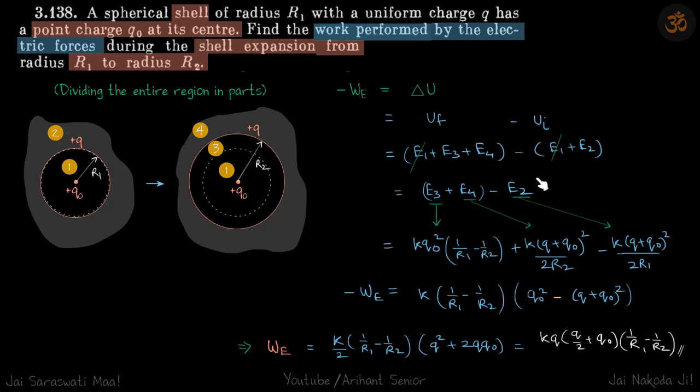E1 gets cancelled and we are left with E3 plus E4 minus E2. So E3 from R1 to R2 because of Q0. We are going to use the formula for the shell. I am sorry, I forgot the 2 here. For the shell it is KQ square by 2R. So from R1 to R2 in this region, the energy will be KQ0 square by 2, 1 by R1 minus 1 by R2.